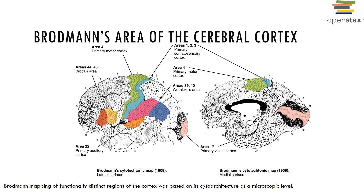The primary motor cortex is located within the precentral gyrus of the frontal lobe and possesses large neurons called pyramidal cells. It allows conscious control of skilled voluntary movements of skeletal muscles. The premotor cortex is located anterior to the precentral gyrus and controls learned motor skills that are repeated or patterned, such as when you learn to play an instrument — sometimes called muscle memory. The premotor cortex also coordinates movements of muscles simultaneously or sequentially by sending activating impulses to the primary motor cortex.